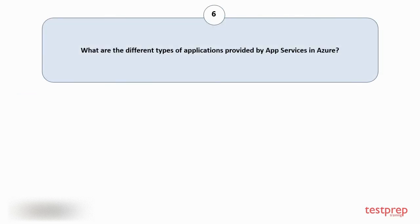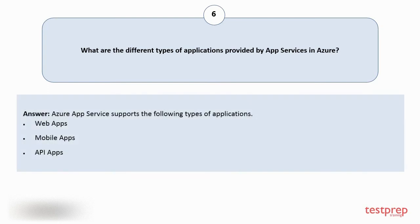Question number 6: What are the different types of applications provided by App Services in Azure? Azure App Service supports the following types of applications: 1. Web apps. 2. Mobile apps. 3. API apps.